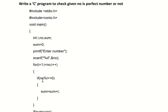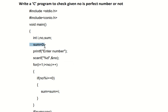The condition is i less than n, so 1 less than 28 — condition is true. Inside the loop, we check: if 28 modulo i (28 % 1) equals 0. Since 28 % 1 gives remainder 0, we go inside the if statement and execute sum = sum + i. The initial value of sum is 0, so 0 + 1 = 1. Now sum equals 1.